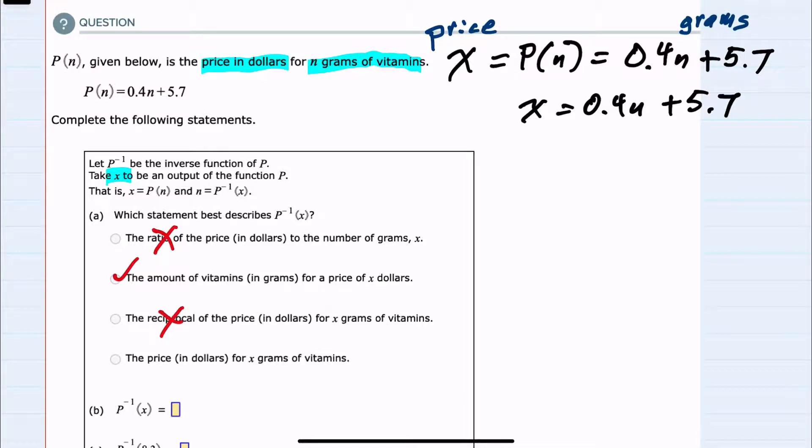To find that inverse function, I'm going to solve for the variable that's currently not solved for—I'm going to solve for n, and that will be our inverse function. Solving for n, to get it by itself on the right-hand side, I would first subtract 5.7 from both sides.